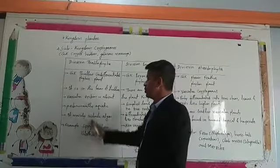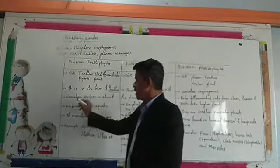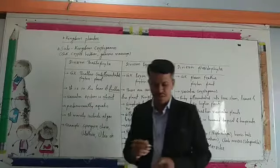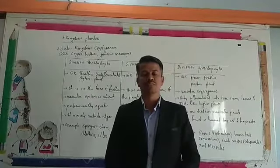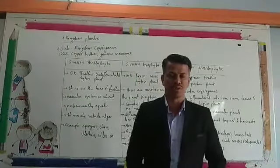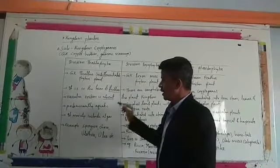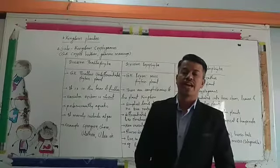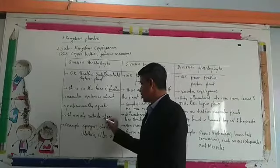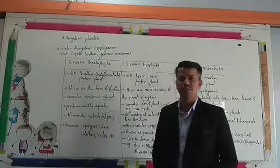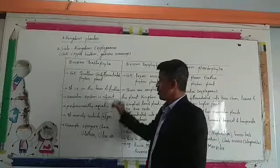The plant body in Thallophyta is in the form of thallus. The vascular system is absent — meaning there is no xylem or phloem tissue for the conduction of water and food. They are predominantly aquatic and mainly include algae, which are found in water or in moist conditions.